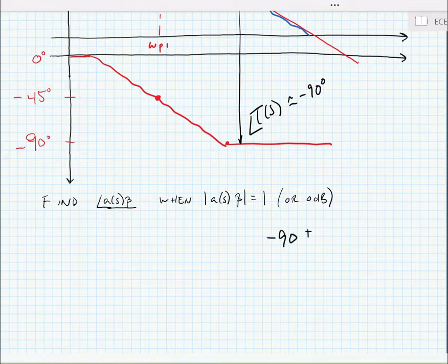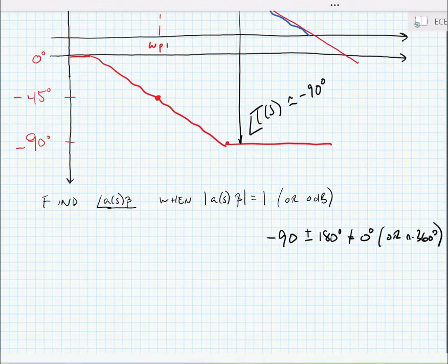So we can say minus 90 plus or minus 180 degrees is not equal to 0 degrees or n times 360 degrees. So we can generally say that this one pole op-amp is stable.